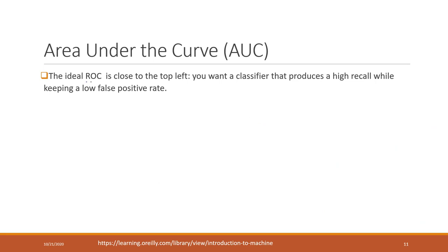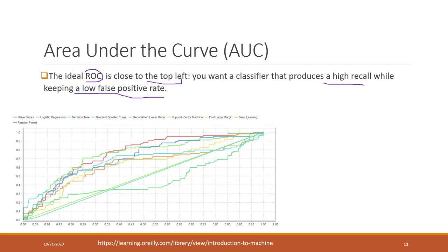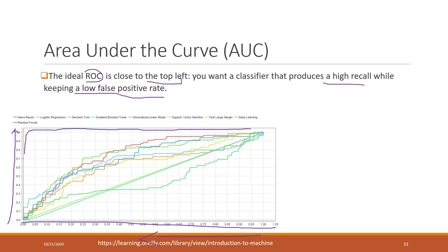Ideally, when we have the ROC curve, we want it to be close to the top left. This is because we want a classifier that produces high recall and a low false positive rate. We want the false positive rate value on the X-axis to be smaller — towards the left — and the true positive rate on the Y-axis to be higher, towards the top. The best curve would look like this, close to the top left.